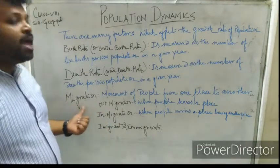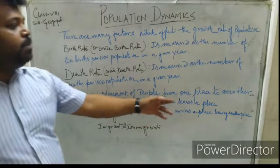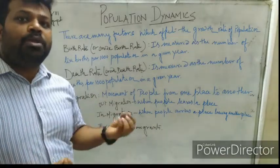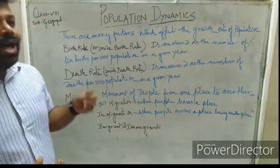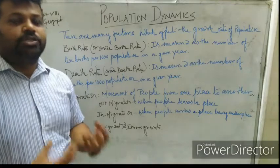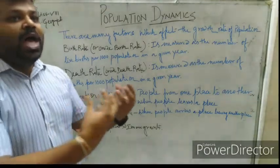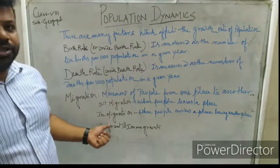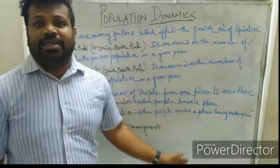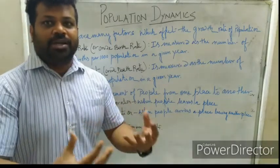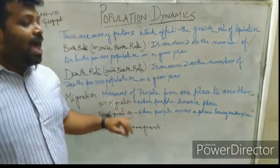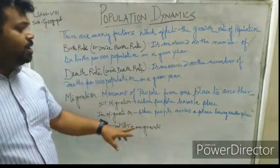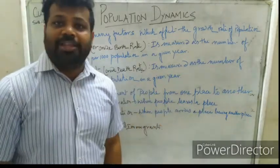Now, what is migration? When anybody moves from one place and resides in another place, that movement is called migration. Out-migration is when people leave a place — for example, if I am living in Krishna and I leave Krishna, that is out-migration. In-migration is when I arrive in Kolkata to live — that is called in-migration.